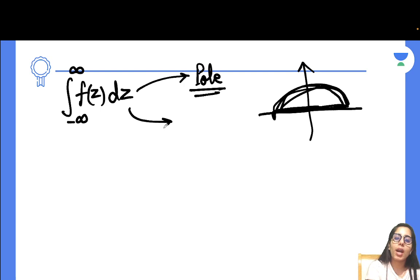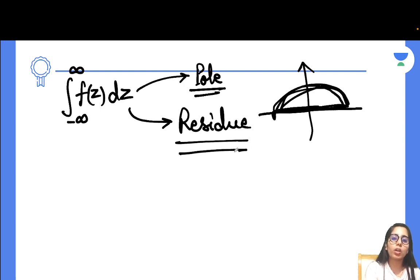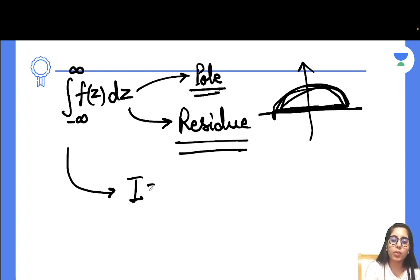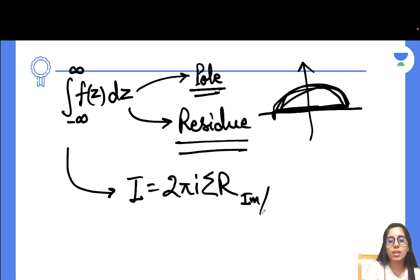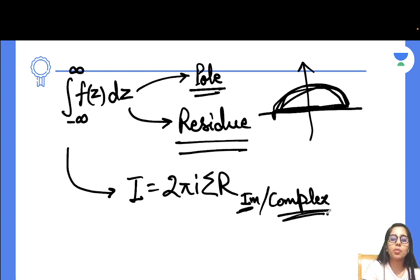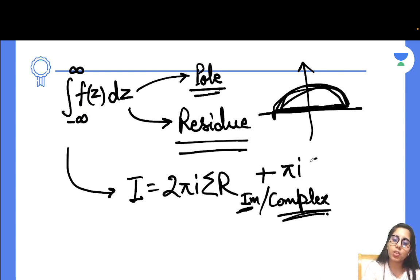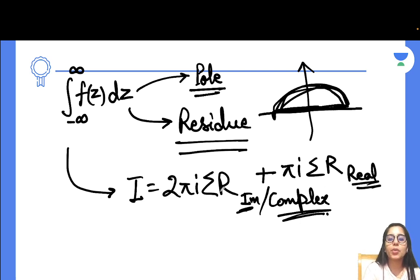After finding the poles, you find the residues at those poles depending on their order, using the same formulas discussed in the last session. Then for the final step: for complex or purely imaginary poles in the upper half plane, the contribution is 2πi times the sum of residues. But if there is also a purely real pole, you use πi times that residue — not 2πi. This gives your total integration value.